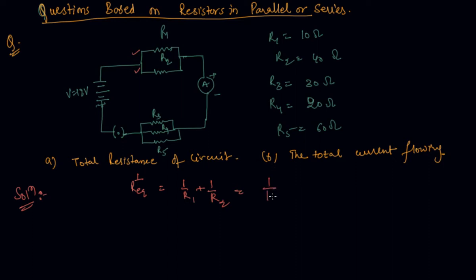So now I can get that 1 by 40. So if I take the 4 plus 1, this is 1 by 8. So R equivalent from here would be 8 ohm.